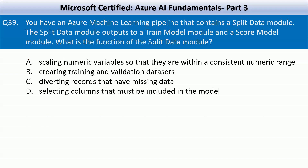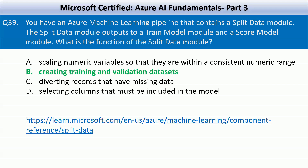The next question: You have an Azure Machine Learning pipeline that contains a split data module. The split data module outputs to a train model module and a score model module. What is the function of the split data module? Your options are: scaling numeric variables to a consistent range, creating training and validation data sets, diverting records that have missing data, or selecting columns to include in the model. The split data module in Azure Machine Learning is used to divide a dataset into multiple subsets, typically for training and validation purposes. A portion of data is used for training the model and the remaining portion is used for validating or testing the model. That's all for this part — stay tuned, keep watching, and keep liking the content.